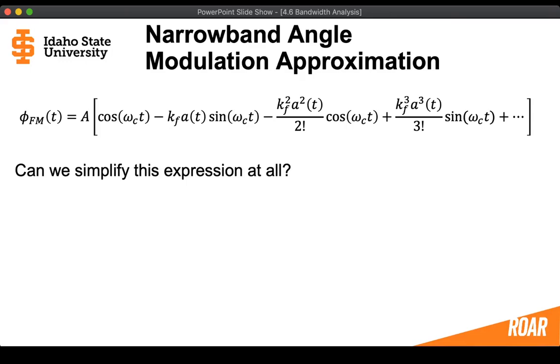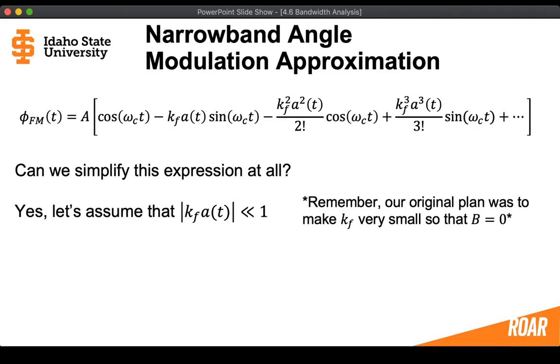So can we simplify this expression at all? And the answer is yes. Let's assume that this term, the absolute value of Kf times A(t), where that A(t) is that integral of the message, let's assume that that's going to be small. And that kind of makes sense because remember, our original plan was we wanted to make that coefficient Kf so small that the bandwidth is going to be equal to zero.